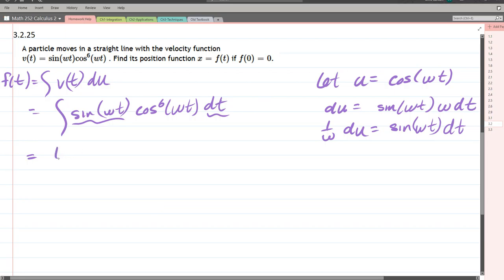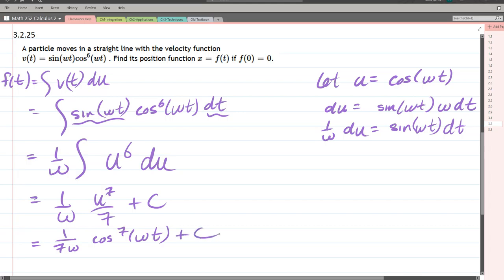And we're left with the constant up front, one over ω, integral. This cosine ωt is u, but of course it's u to the sixth power. So it's u to the seventh over seven plus a constant. And that is one over seven ω cosine to the seventh. I'm unsubstituting here, plus constant. And this is f of t.